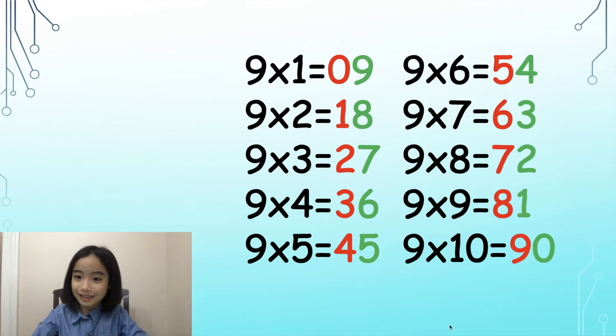Here is the 9 times table. First, we've done 9 times 3 equals 27. And secondly, we've done 9 times 6 equals 54.